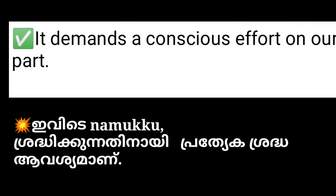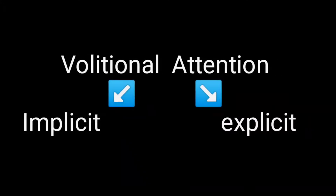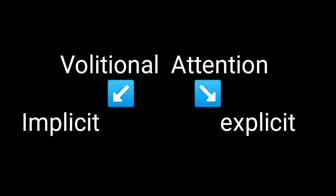Volitional or voluntary attention demands a conscious effort on our part. We have a clear-cut goal before us and we make ourselves attentive for its accomplishment. Examples include answering questions in an examination and solving an assigned problem in mathematics. Volitional attention is further subdivided into two categories: implicit volitional attention and explicit volitional attention.